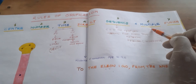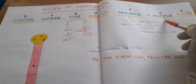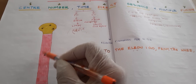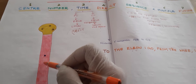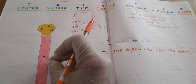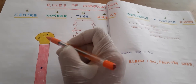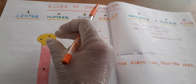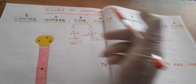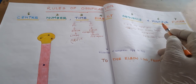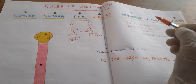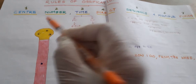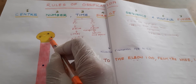The sixth rule is about multiple centers. If there are multiple primary centers of ossification in the shaft (diaphysis), they appear at the same time. If there are multiple secondary centers of ossification in the epiphysis, they appear at different times.